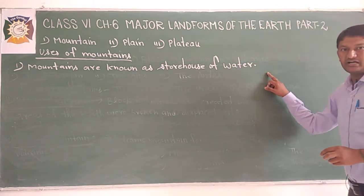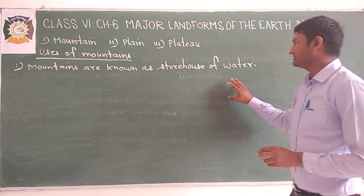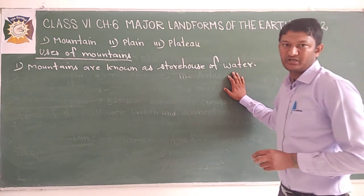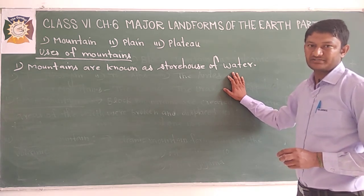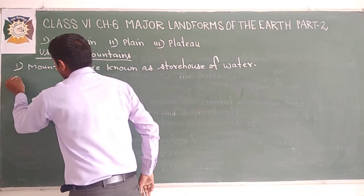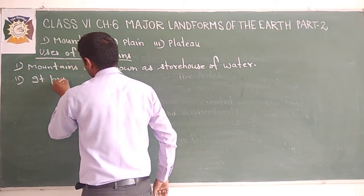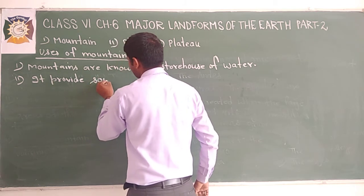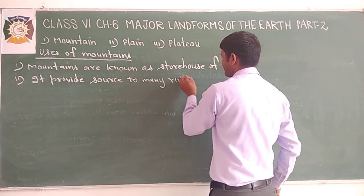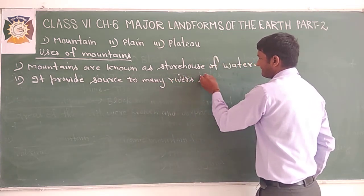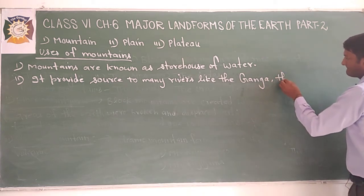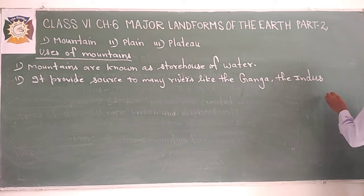The first and foremost use of mountains is that they are known as the storehouse of water. How? If you take the example of the Himalayas, they provide the source to many Indian rivers like the Ganga, the Indus, and the Brahmaputra. Mountains provide the source to many rivers.